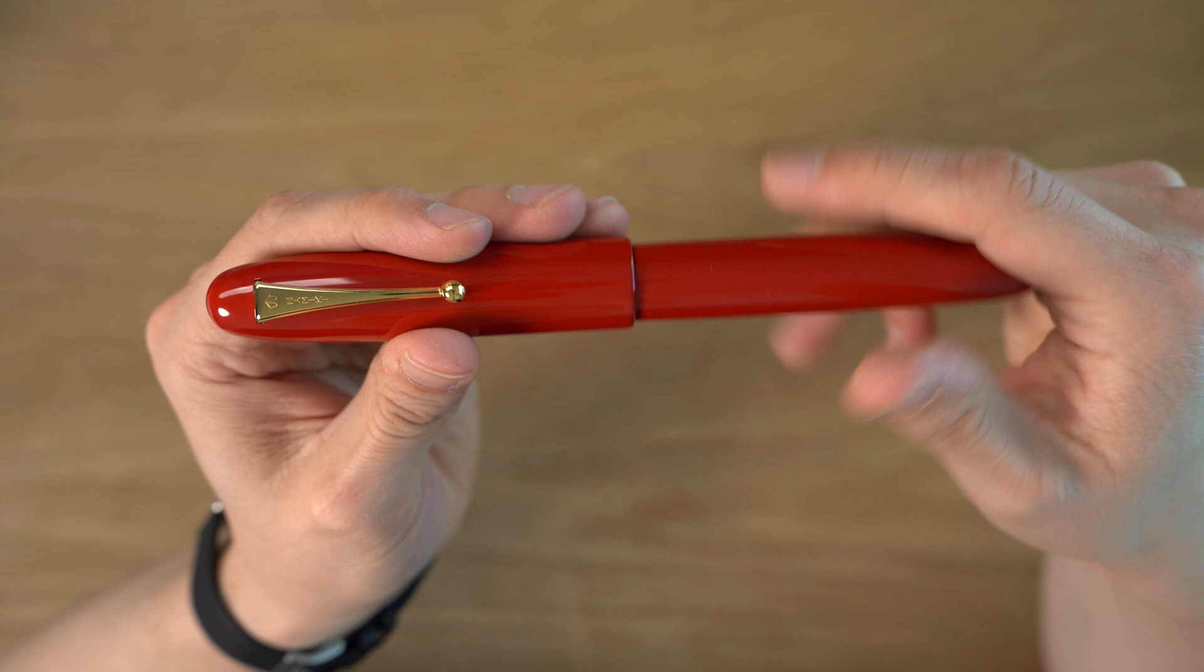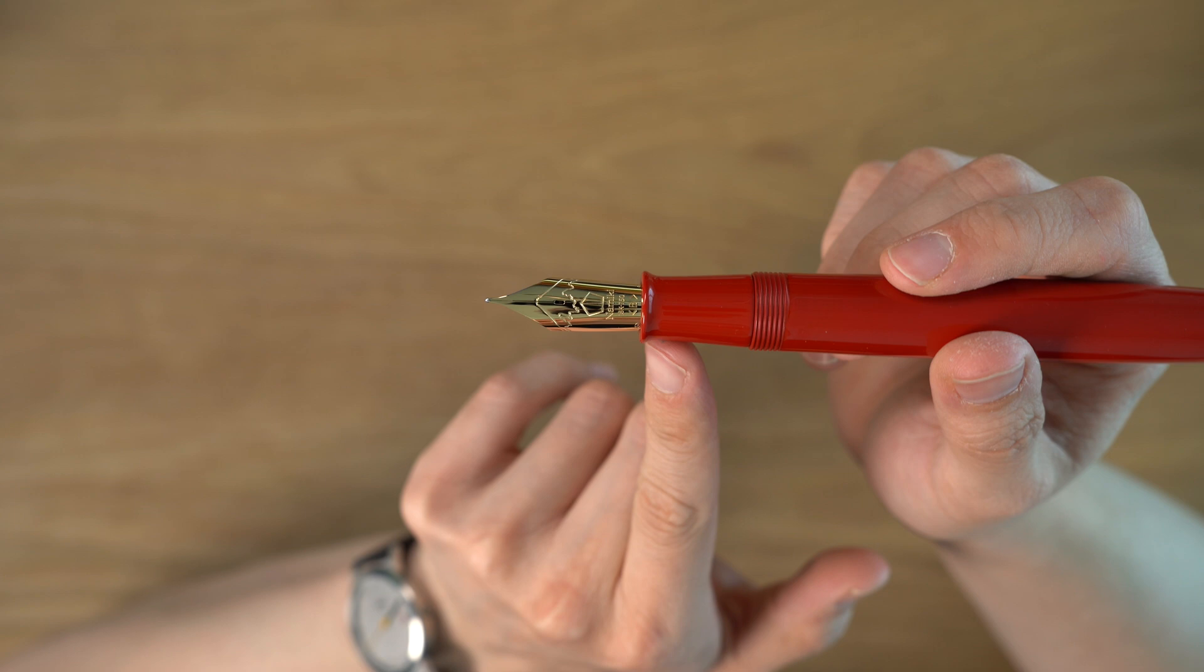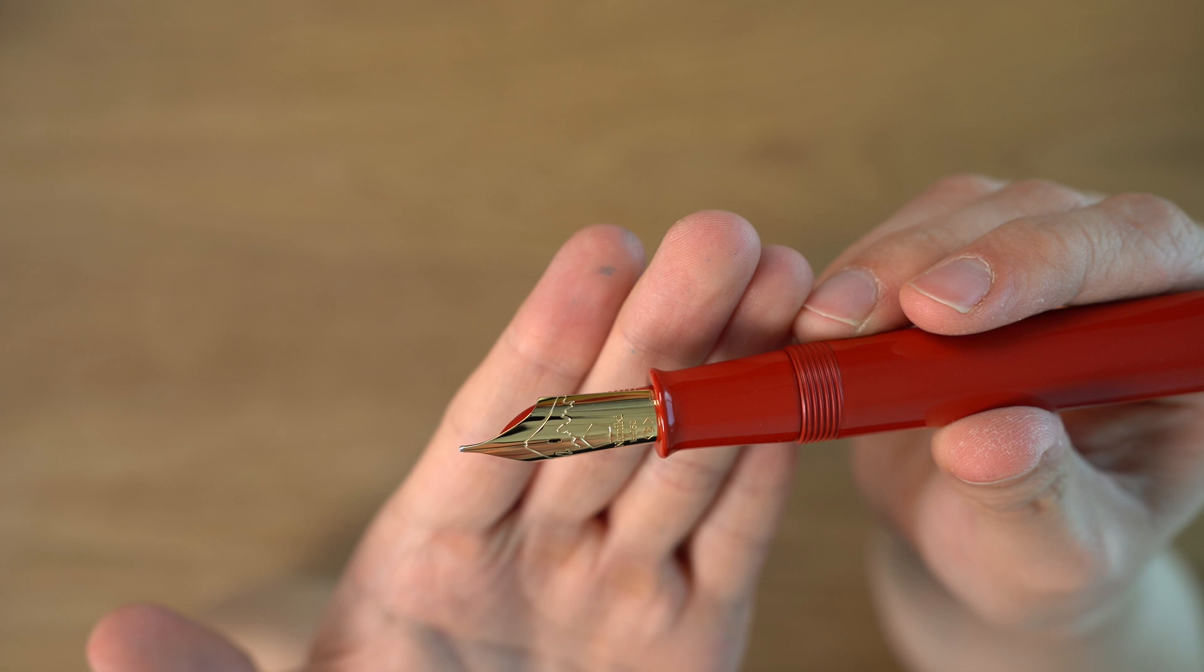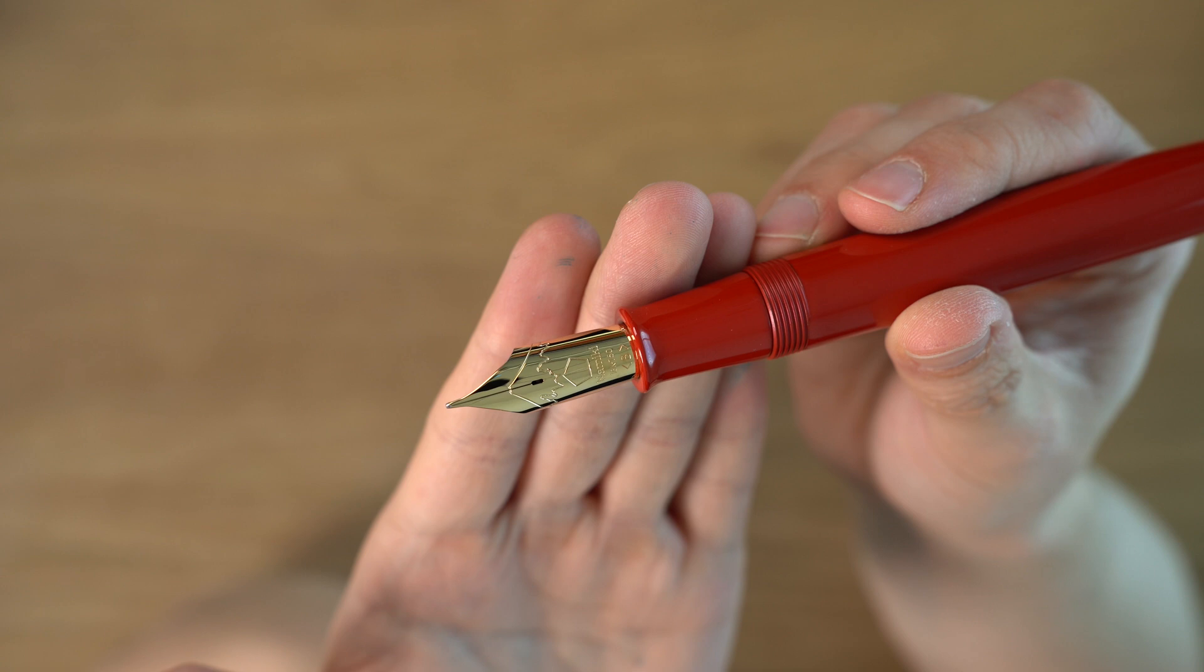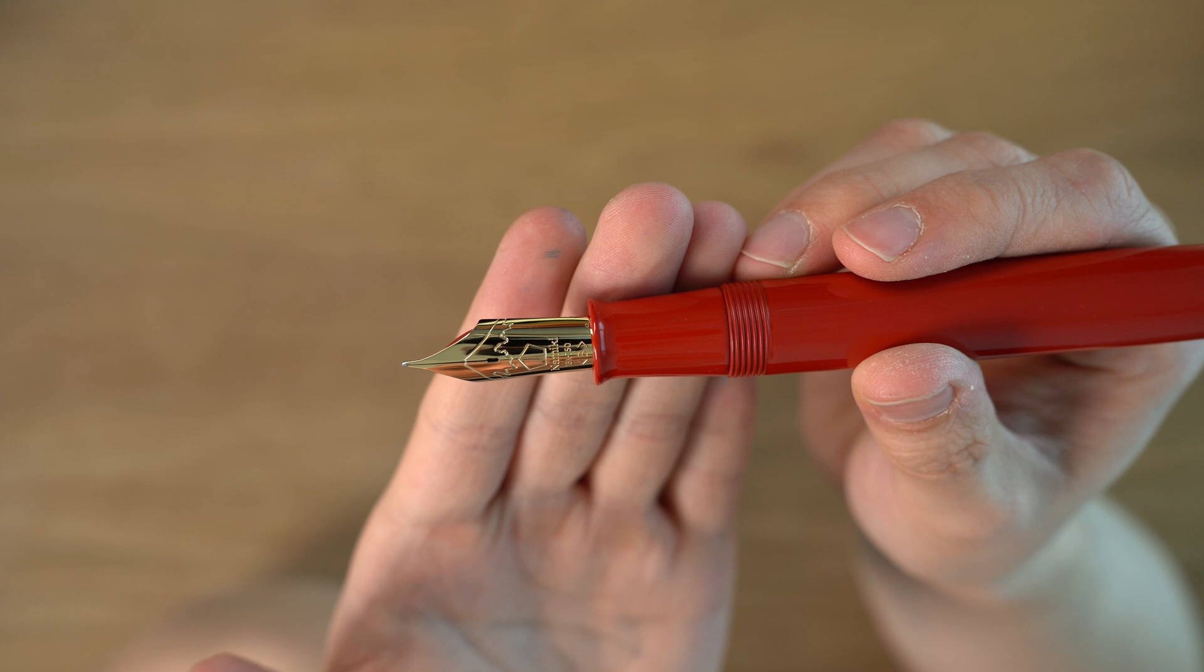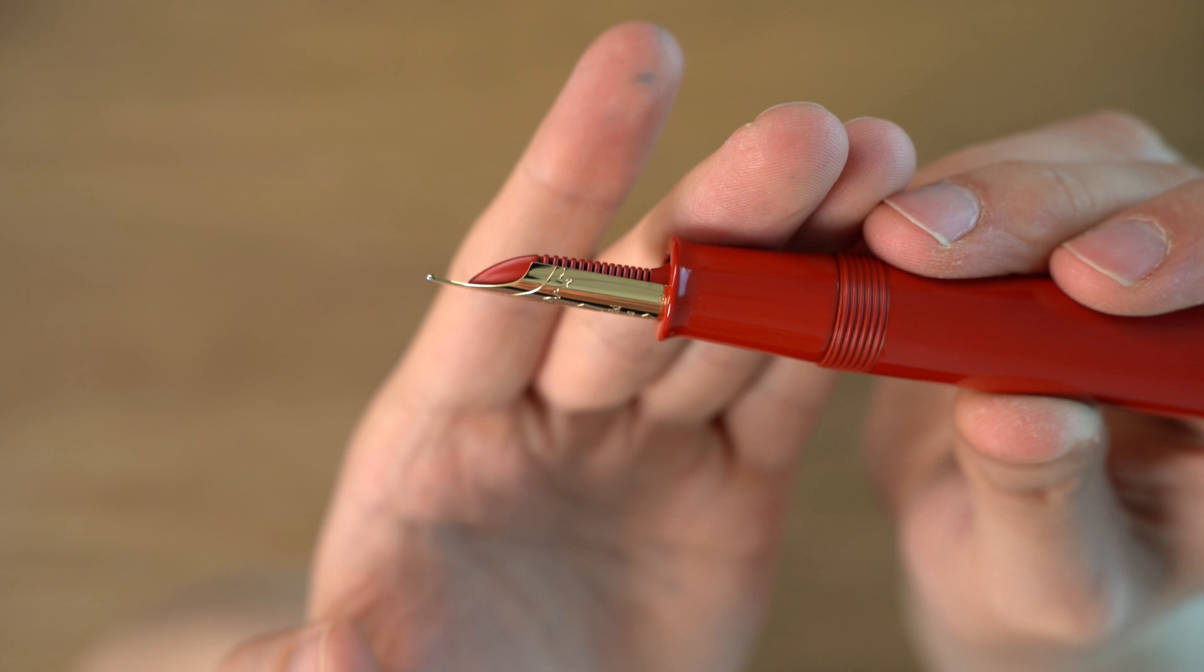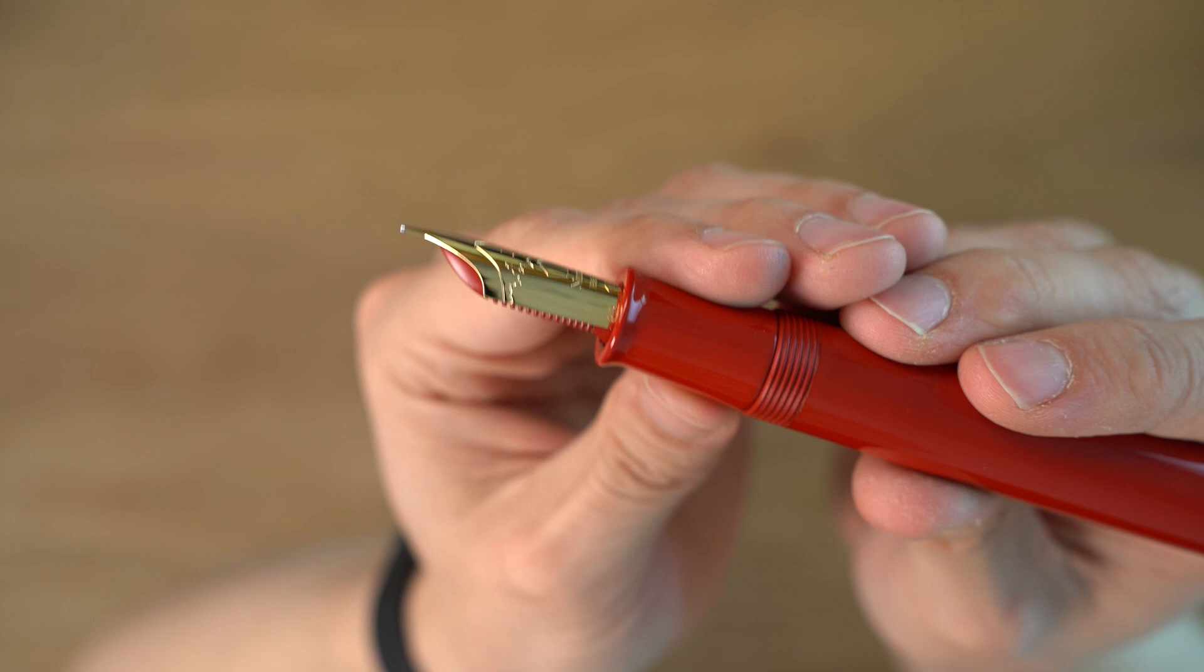Taking the cap off, we can now see the section threading here, and then the section which tapers down and then flutes out. And then we have the gigantic number 50 nib here with Mount Fuji. We have this oval style breather hole, and then we have the Namiki pentagon. I don't know if it's supposed to look like a nib or what, but it says Namiki 18 karat gold, 750, B for broad. On the side, right near the section, you can see the production date, 6-21, so June of 21. And then there's a Namiki or a pilot hallmark on the other side.